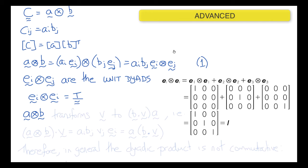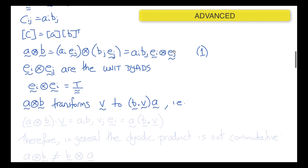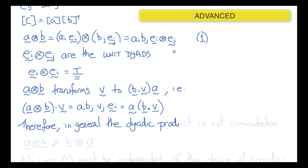We can also show that A dyadic B transforms one vector V to a new vector, which is (B·V) times A — a scalar times A, which is a new vector. To prove this, take A dyadic B dotted with V: that gives Ai Bj Vj times Ei, which equals A times (B·V), since Bj Vj is the dot product of B and V. From this we can see that the dyadic product is not commutative — in general, A dyadic B is not equal to B dyadic A.